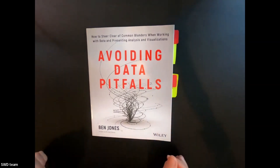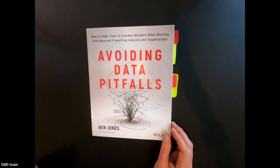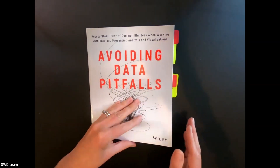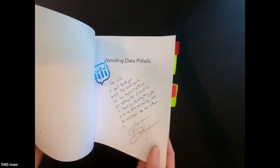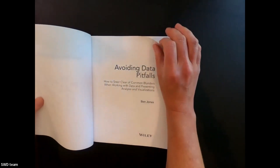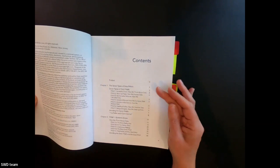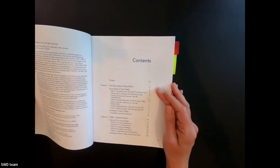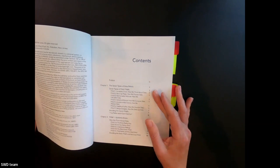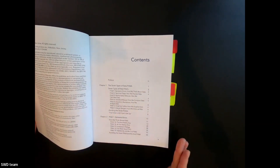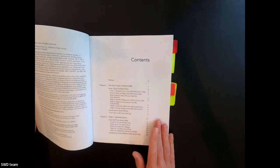I thought today we'd take a peek at the interior and I'll share some of my perceptions as we do so. I have a special copy that's actually signed, which is always fun. Chapter one sets out seven types of pitfalls that really make up the majority of the book — we can see those listed here.